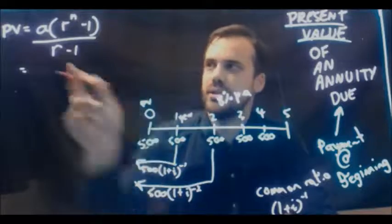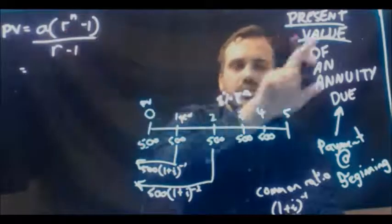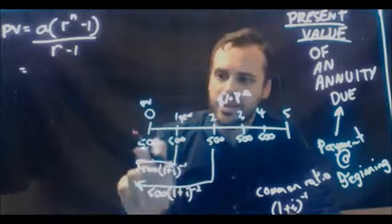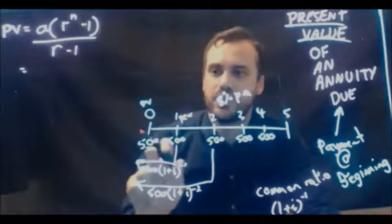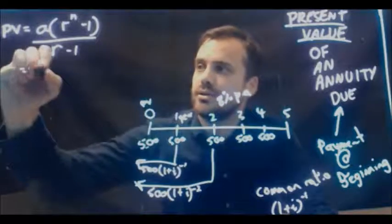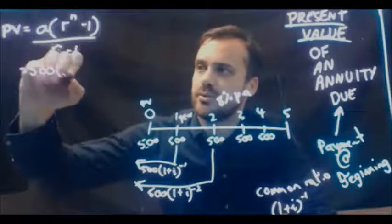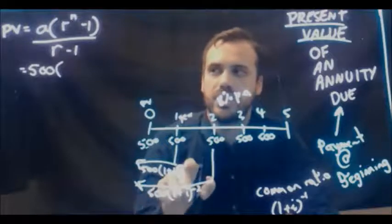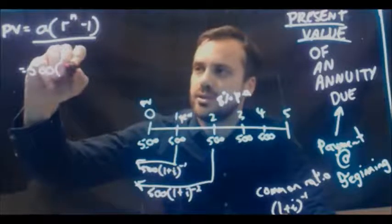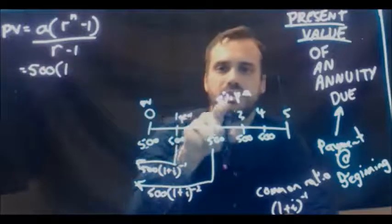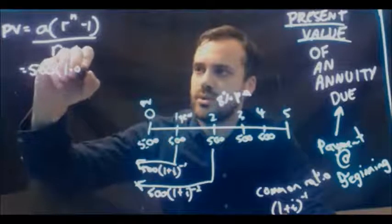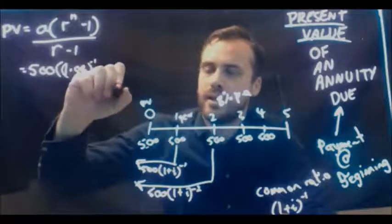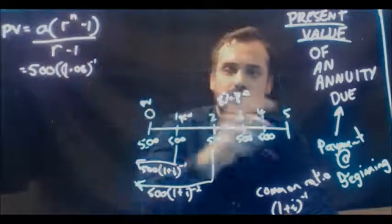Now, careful here. You need to think about what your first factor is. Now, when last we did the present value, the first factor was 500 times 1 plus i to the negative 1. But here you can see that our first amount is just 500. So this one's a much easier one to deal with. Now, our common factor, each one of these is being multiplied by 1 plus i to the negative 1. So 1 plus i, our interest rate is 8%. So that's going to be 1.08 to the power of negative 1. And then raise that to the power of n for five years.